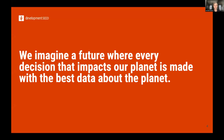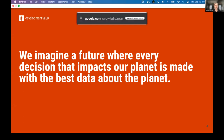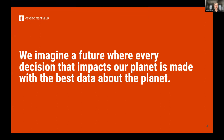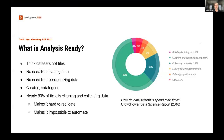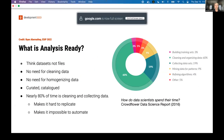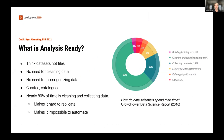I want to leave some time for discussion, so I'll go through the rest of our slides quickly. I think everyone agrees on why analysis-ready and cloud-optimized matters. We imagine a future where every decision that impacts our planet is made with the best data about the planet. Nearly 80% of time is spent cleaning and collecting data. When data is not analysis-ready, it makes it really hard to replicate and impossible to automate the actual analysis. We want to think about datasets and not files — Alexandra's example is helpful because you see how she's querying for spatial and temporal extent without doing a lot of data management herself.